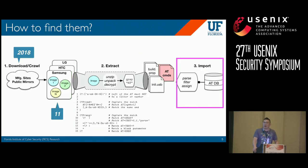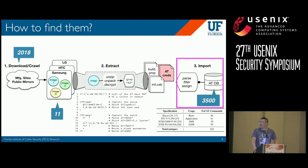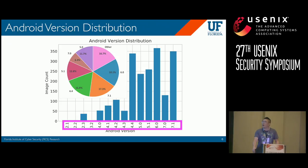In step three, we process and parse all potential AT commands to find those likely to be real AT commands and save them into a database. In the end, we discovered 3,500 unique AT commands. We also crawled some specifications and collected over 200 standardized AT commands.